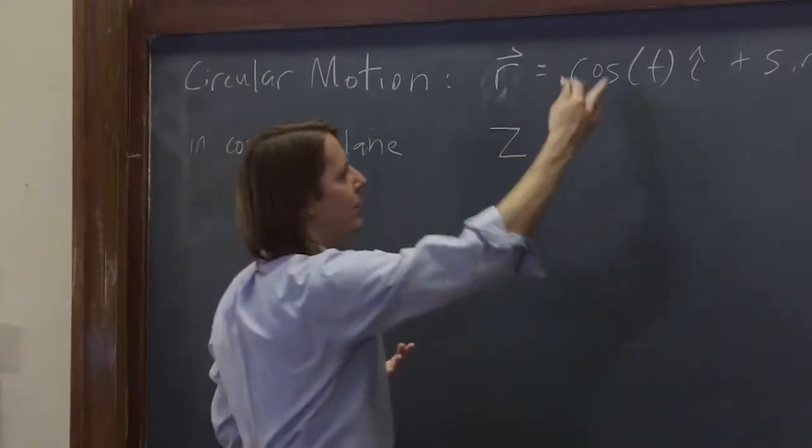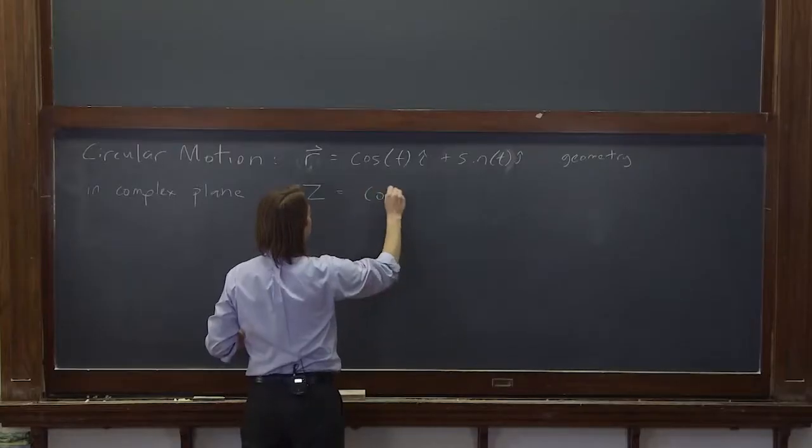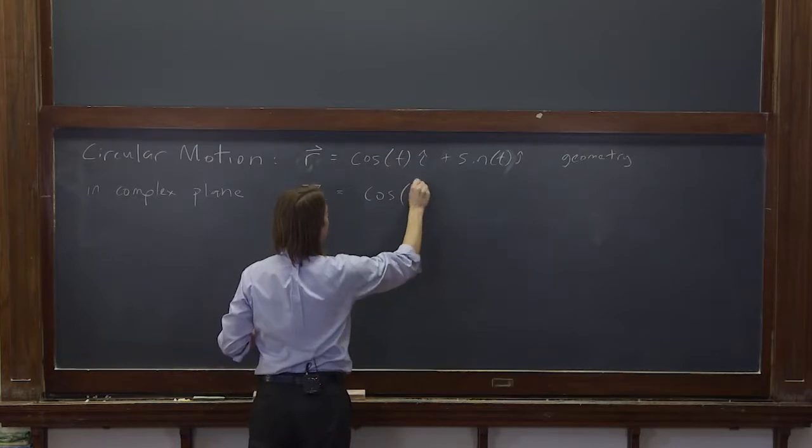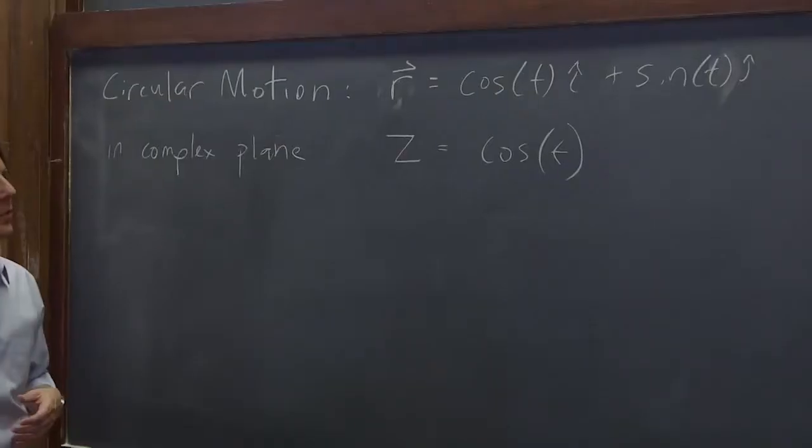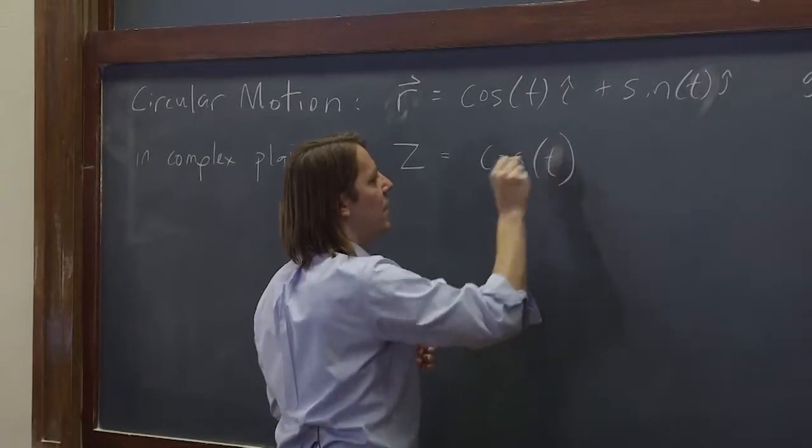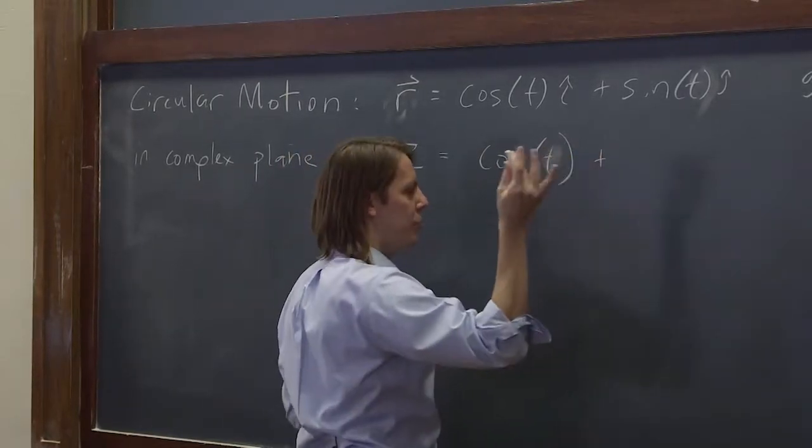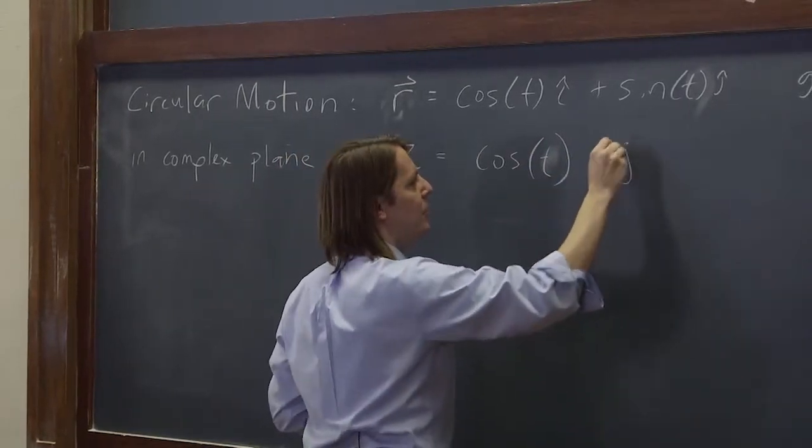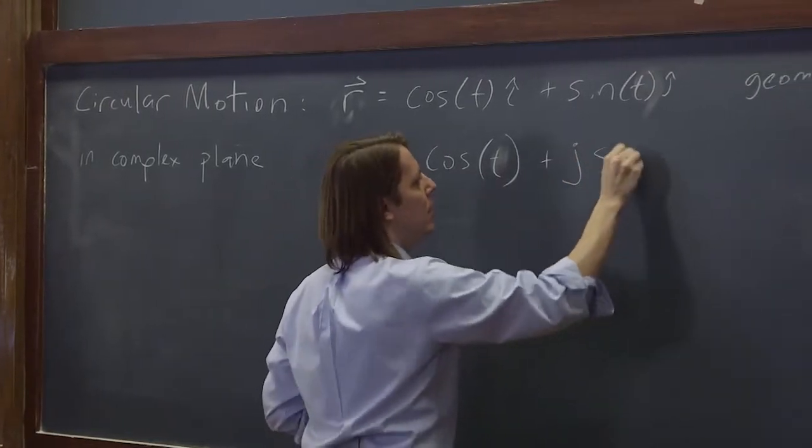So now we're going to describe circular motion in that complex plane. Well, it's very similar. On the real axis, let's put cosine t - the object can oscillate as a cosine on the real axis, and as a sine on the imaginary axis. According to our algebraic method, that means you just multiply it by j. So j sine t.